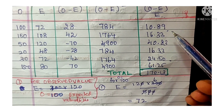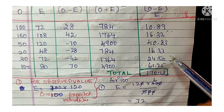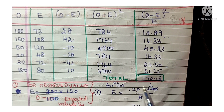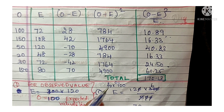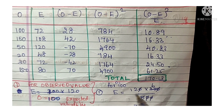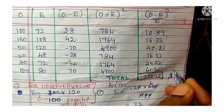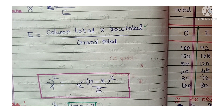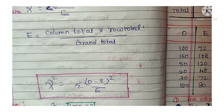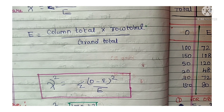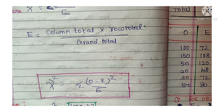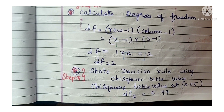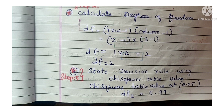Adding all values: 10.89 + 16.33 + 40.83 + 16.33 + 24.50 + 61.25 = 170.13. This is your calculated chi-square value: χ² = 170.13.